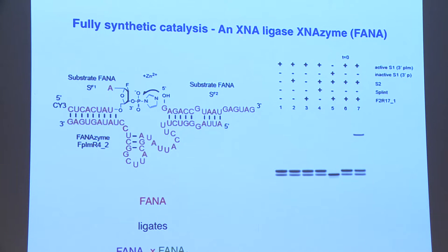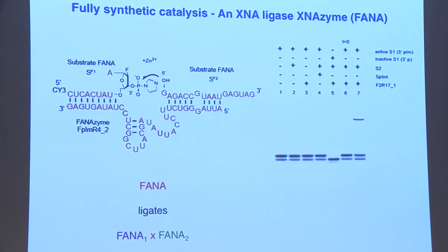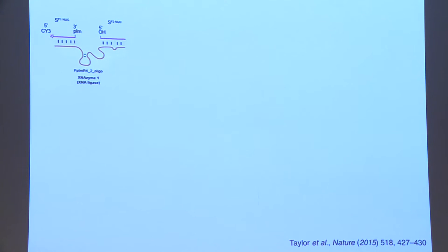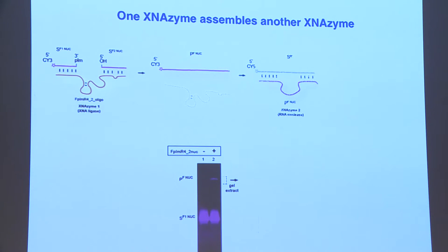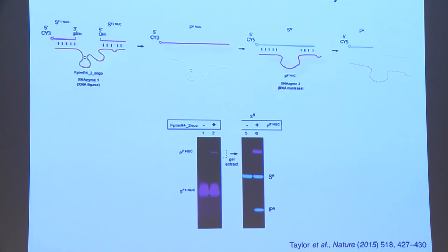This is an XNA ligase XNA-zyme — both substrates are now also XNAs, as well as the enzyme. This ligates two pieces of fluoro-arabino nucleic acid together, and only in the presence of both substrates and the enzyme do you get a ligation. This now allows us to ligate together the FANA-zyme endonuclease, hybridize it to its RNA substrate, and get cleavage — a two-step assembly where an XNA-zyme assembles another XNA-zyme.